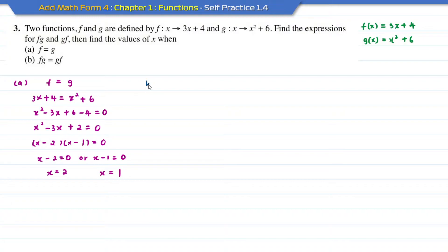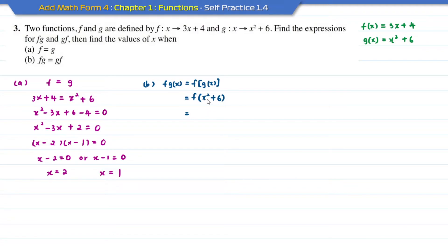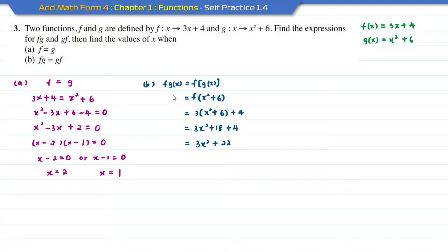For question b, it states that fg and gf, the composite functions, are equal to each other. First I need to find the composite function fg, which means inserting the function g into f. The function g is x squared plus 6, so inserting into f gives 3(x squared plus 6) plus 4. Expanding, I get 3x squared plus 18 plus 4, which gives 3x squared plus 22. That is the composite function fg.